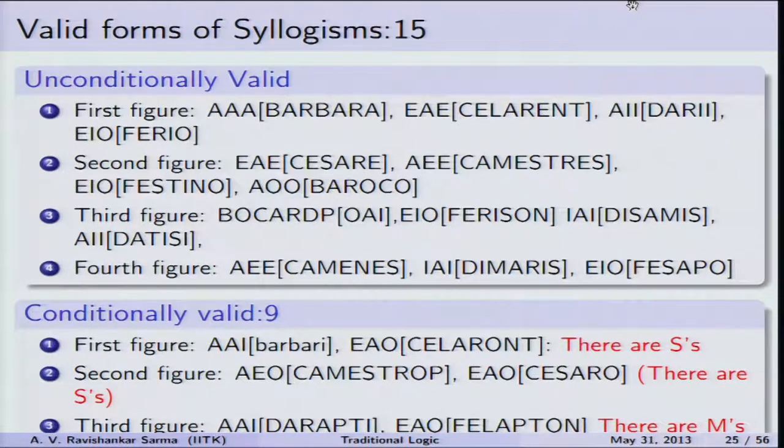An important assumption in Aristotle's logic is that all terms refer to non-empty sets — terms like 'unicorn' or 'ghost' are not permitted because they are empty sets. Modern logic allows such terms, but in Aristotle's system assuming 'all unicorns are intelligent' would imply unicorns actually exist, which leads to problems. This limitation will be addressed when we discuss existential import.